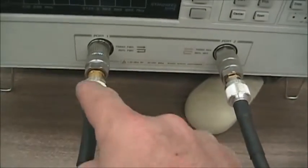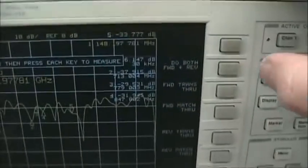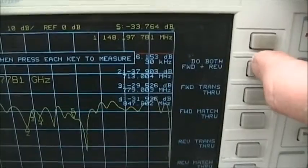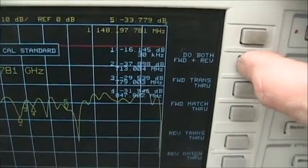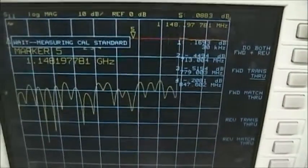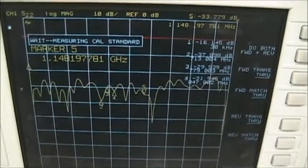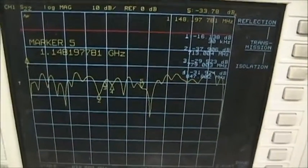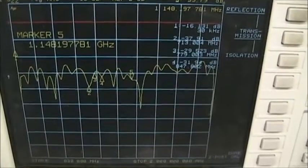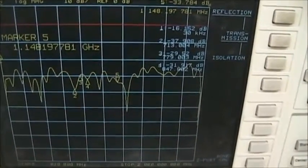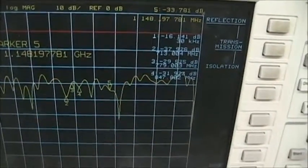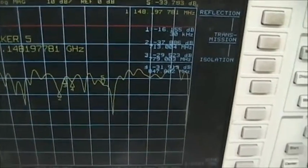With the cable connected between port one and port two, now we simply press the button, do both. It'll actually take four measurements: forward through, forward match, reverse through, and reverse match. It's basically checking from port one to port two, both transmitter and receiver.